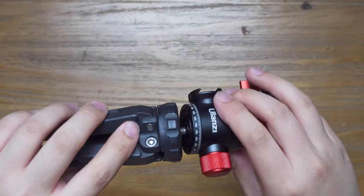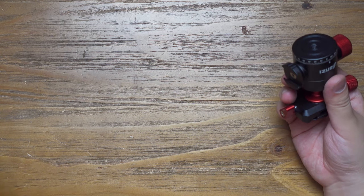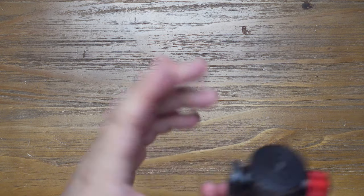You can mount this ball head to any mini tripod that has a quarter-inch screw on the top. It has a panorama rotator on the bottom, and the position is very high.